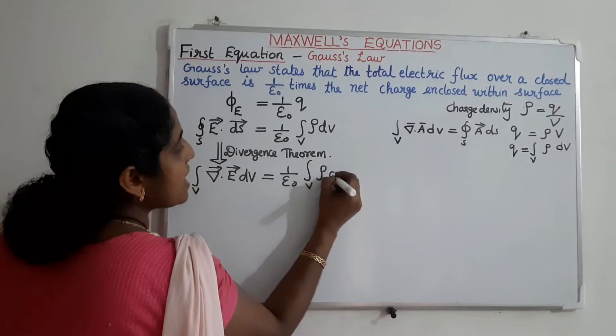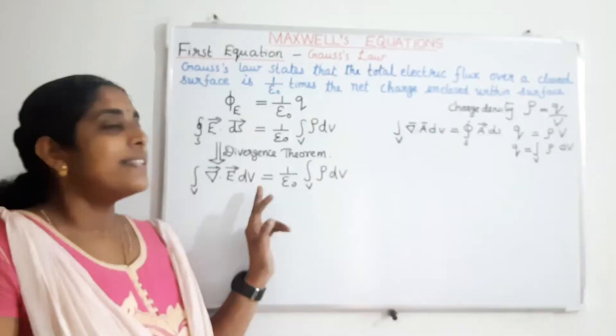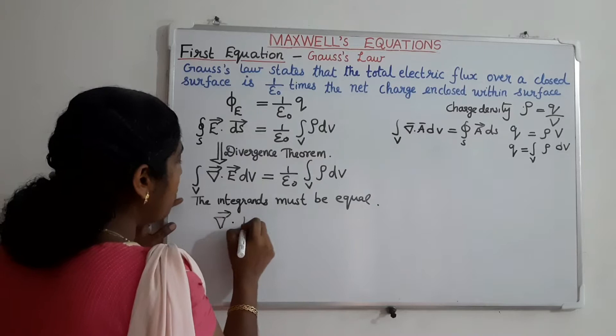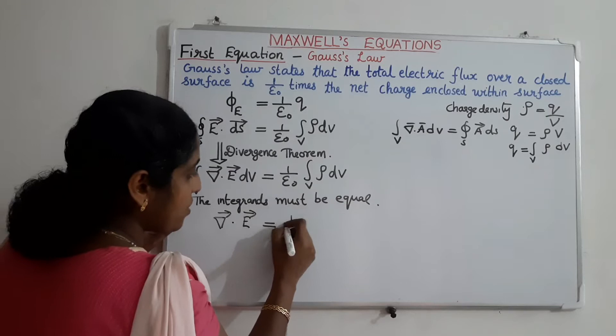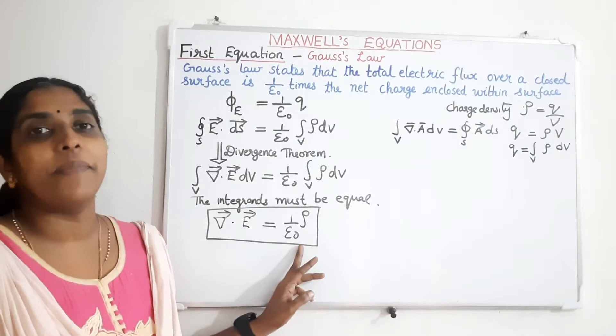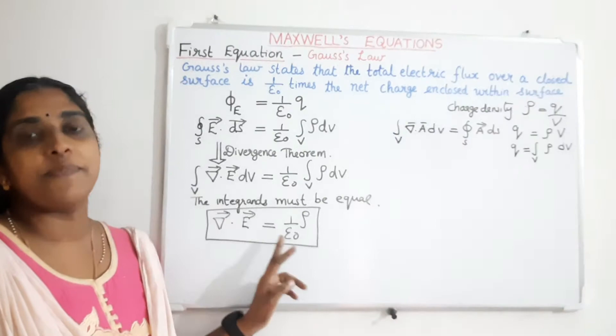Now on the LHS and RHS we have a volume integral. This equation is true for all arbitrary volumes, so the integrands must be equal. The integrand on the left-hand side is del dot E, which equals 1 by epsilon-0 times rho on the right-hand side. So Maxwell's first equation is: del dot E equals 1 by epsilon-0 times rho. Here rho is the charge density, E is the electric field, and epsilon-0 is the permittivity in free space.